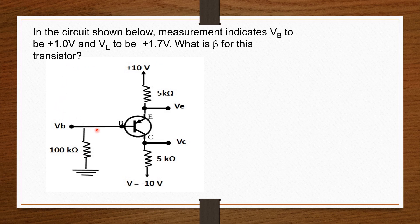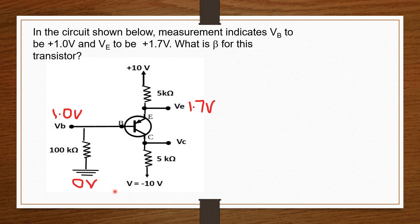We are supposed to find beta for this transistor. From the question, VBE is 1.0 volts and VE is positive 1.7 volts. The earth portion has a voltage of 0 volts. Now because there is no resistor between the node VB and B, the voltage at B is also 1.0 volts.